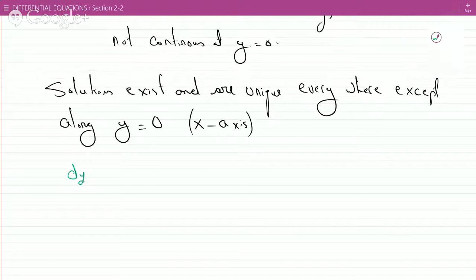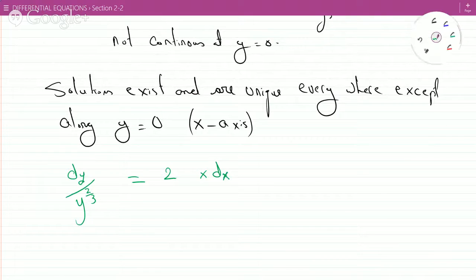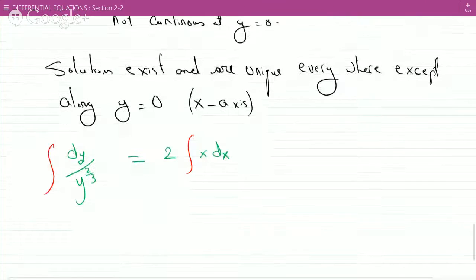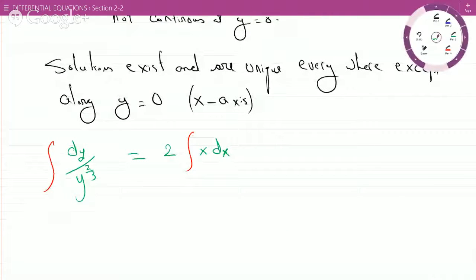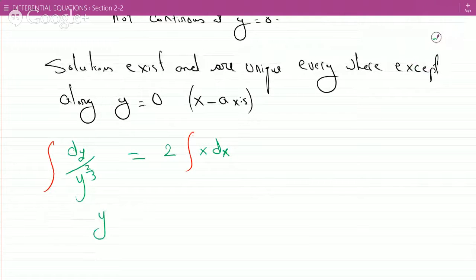Separate the variables so you get dy over y to the two-thirds. I just separate the variables and this is 2x dx. And then just integrate both sides now. This two is a constant, I can leave it outside the integral. And bring this y to the two-thirds up.